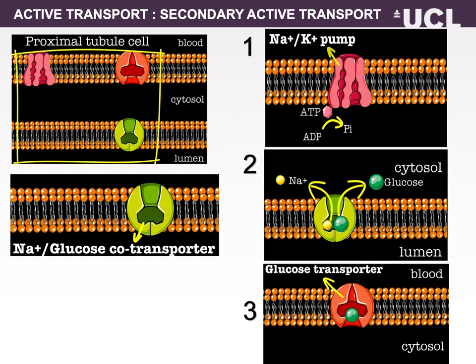Secondary active transport, also known as co-transport, is composed of two separate functions. The energy-dependent movement of an ion generates an electrochemical gradient of that ion across the membrane. The ion gradient is coupled to the movement of a solute in either the same direction, symport, or in the opposite direction, antiport. The movement of the pumped ion down its electrochemical gradient is by facilitated diffusion.